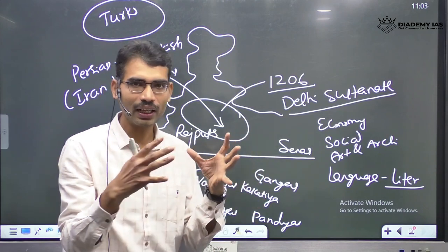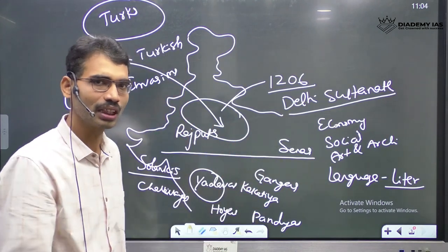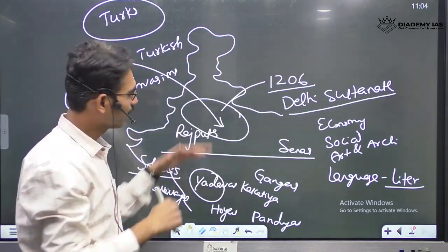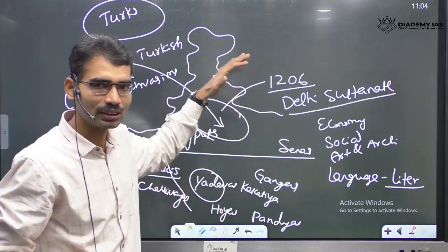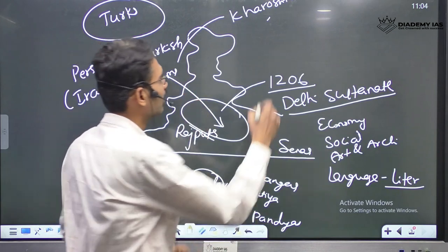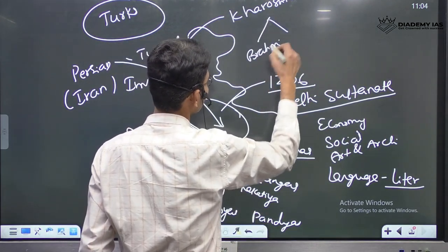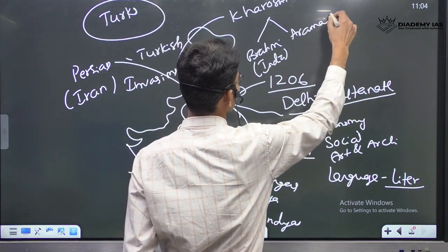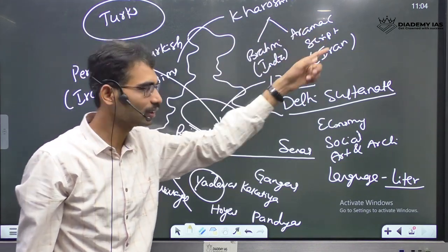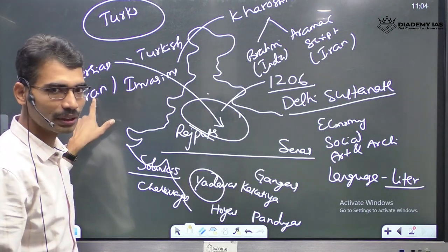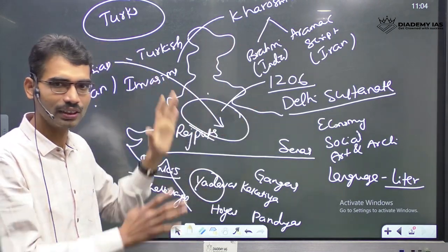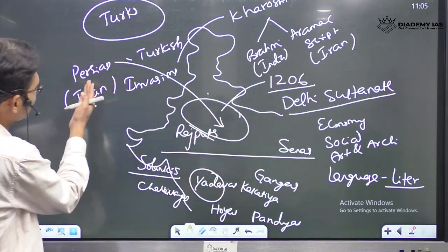If you remember the Ashoka time period — Ashoka issued certain inscriptions in mainland India in Brahmi script, but in the northwestern part in Kharoshti script. Kharoshti script is a development from Brahmi script combined with Aramaic script from Iran. This shows the interaction between Indian and Iranian sides was very ancient. By medieval times, Persian language now entered and became very important.